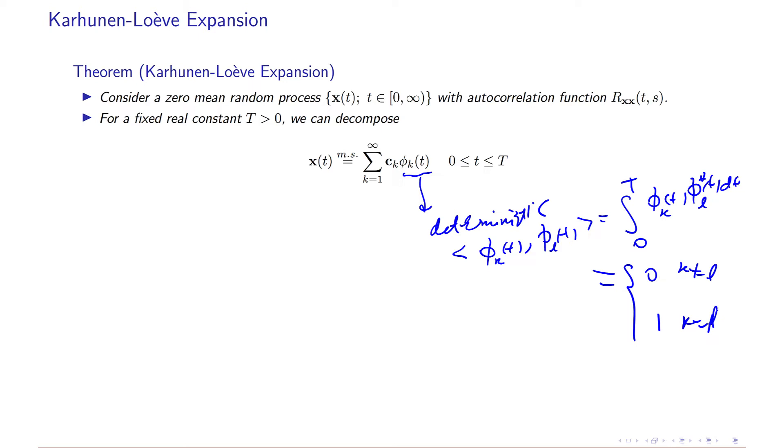And then c k can be calculated easily, is equal to the dot product of x of t and phi k of t.